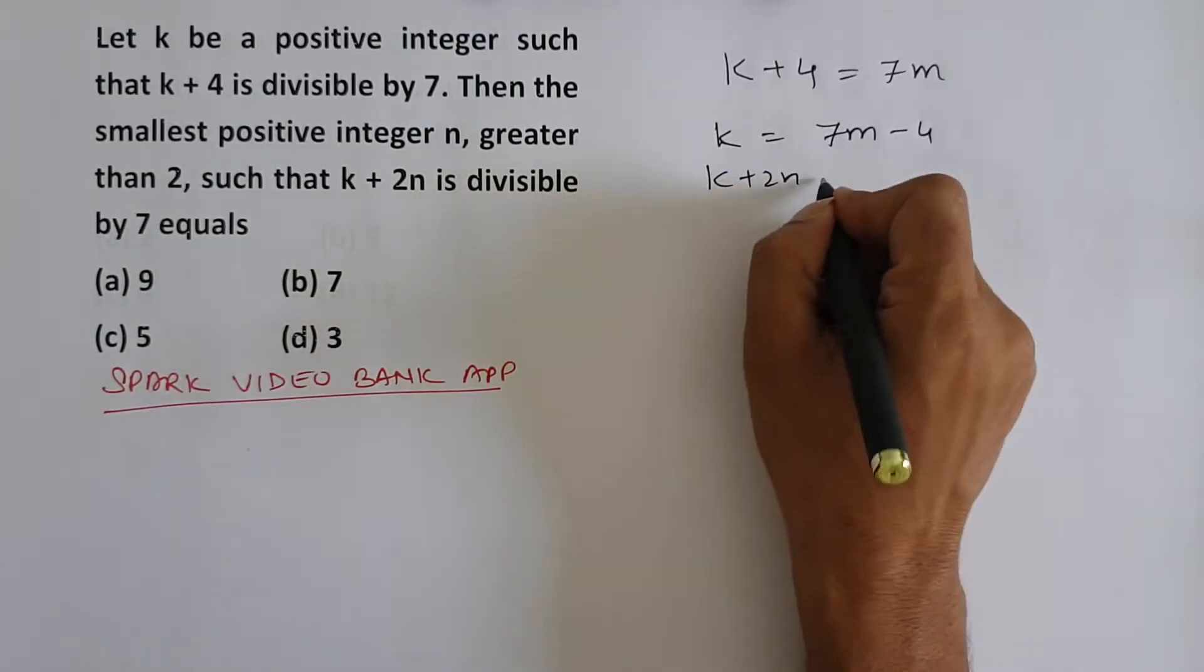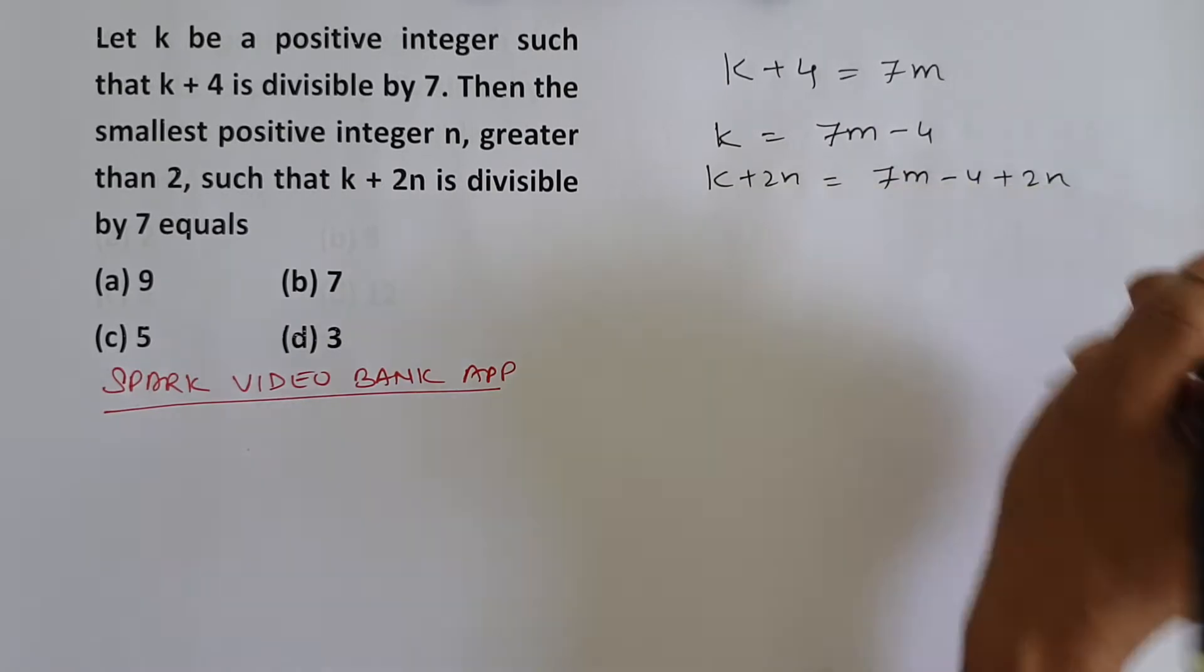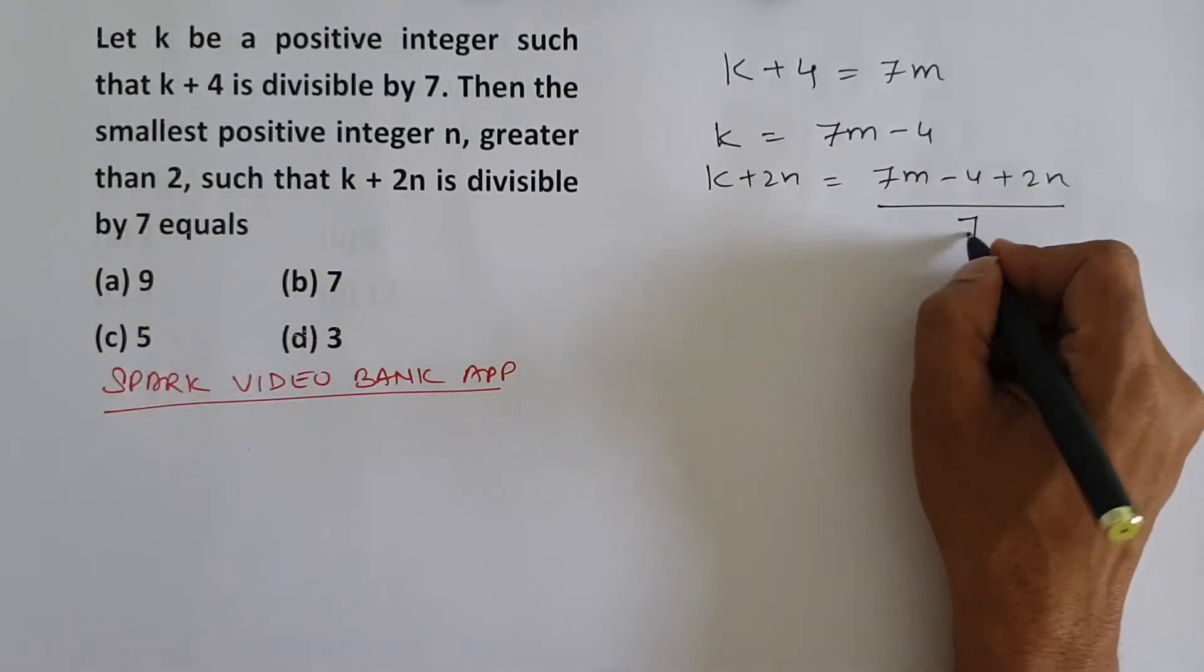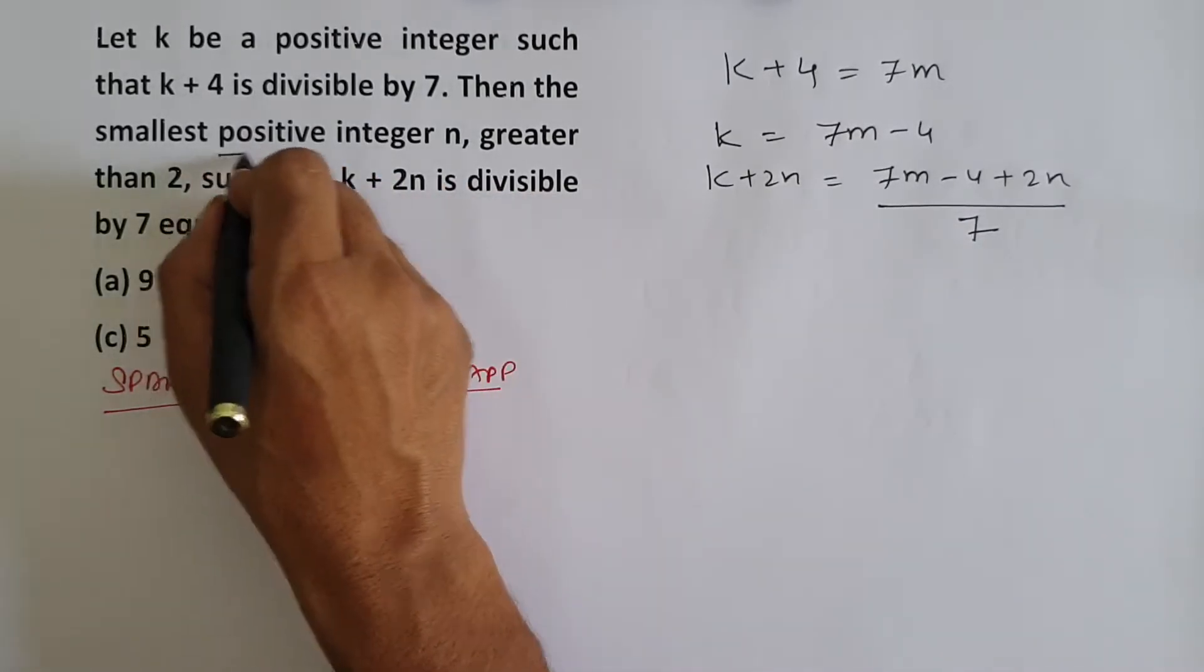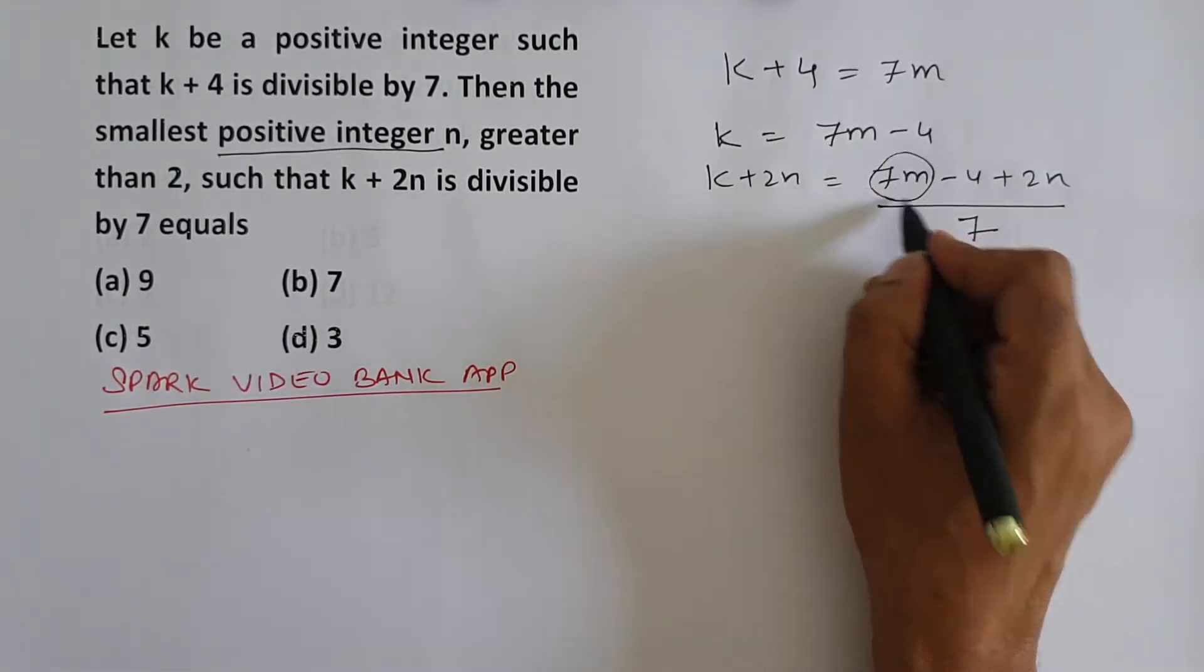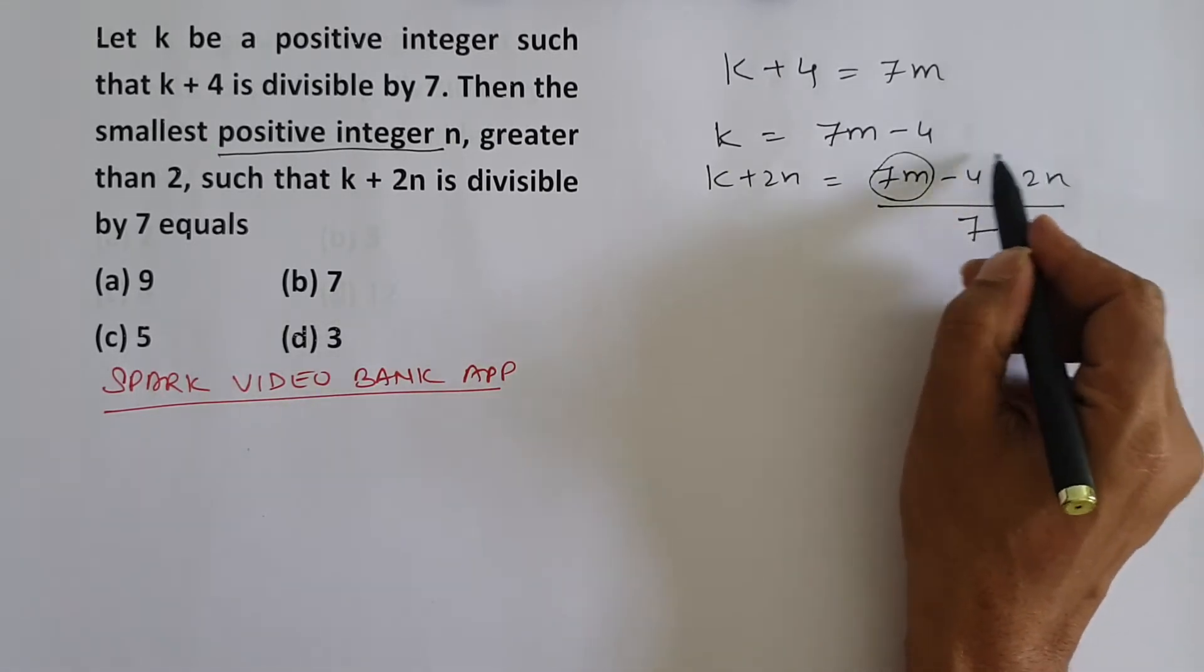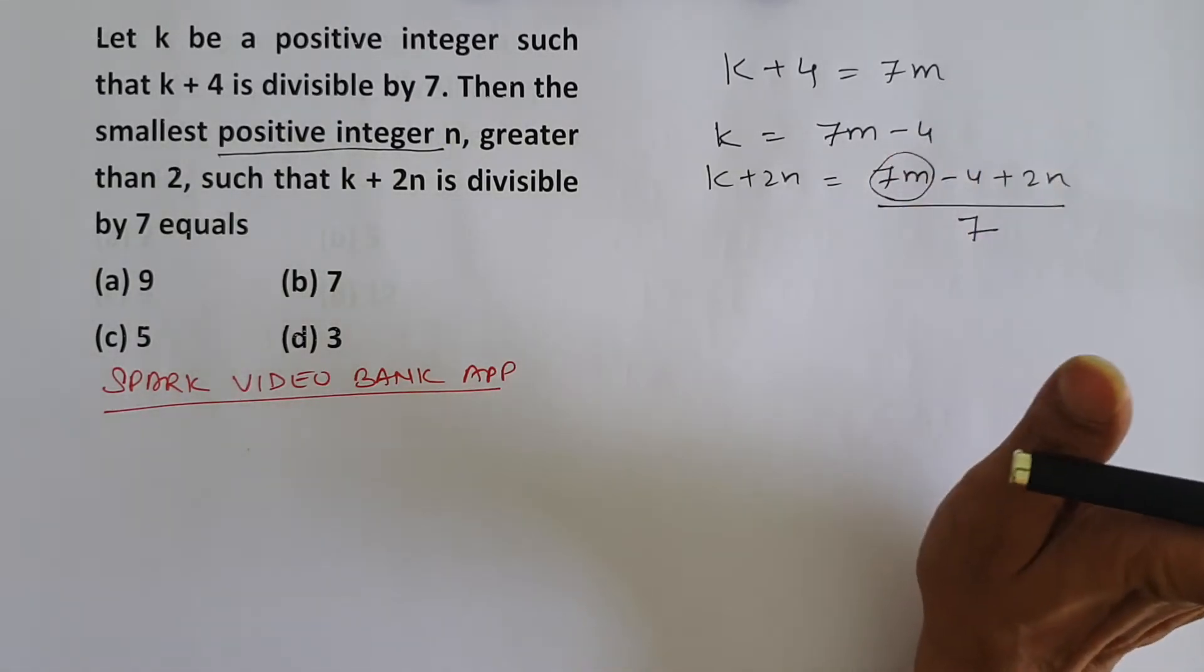k plus 2n will be 7m minus 4 plus 2n. This number needs to be divisible by 7. We need to find the smallest positive value of n. Now see, 7m is completely divisible by 7. So this number needs to completely cancel out, only then will k plus 2n be divisible.